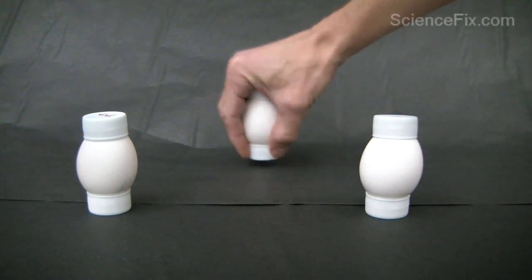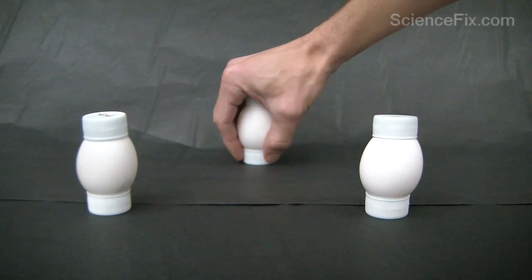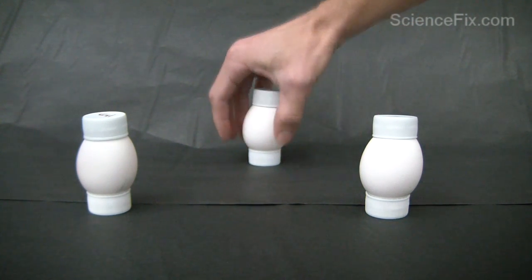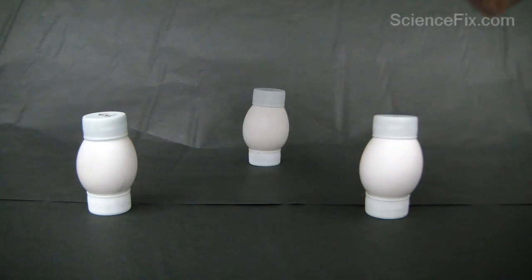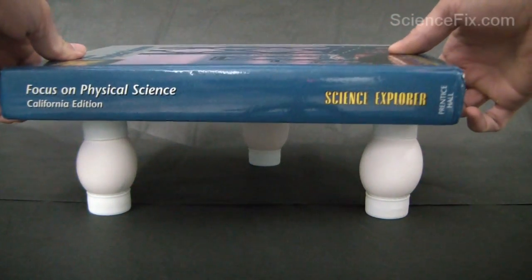We're then going to space out the eggs to form a nice tripod so that they're evenly spaced. Then on the eggs, we're going to place a textbook with each textbook weighing five pounds.